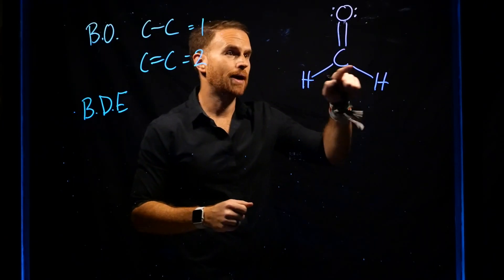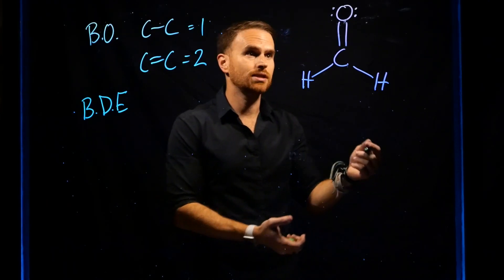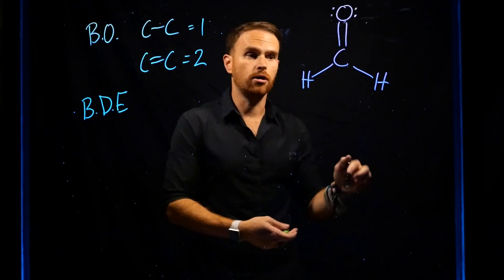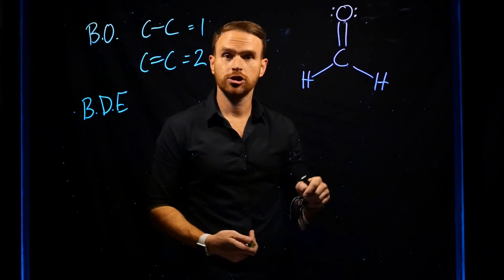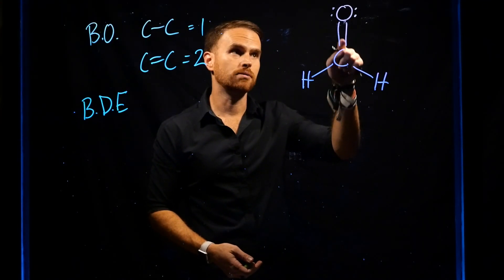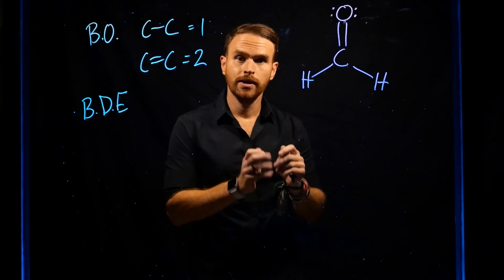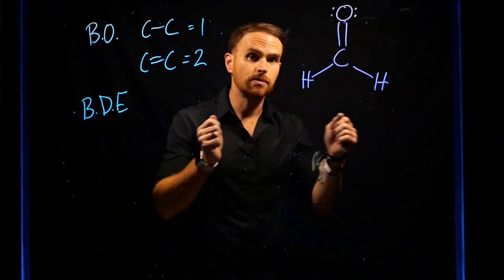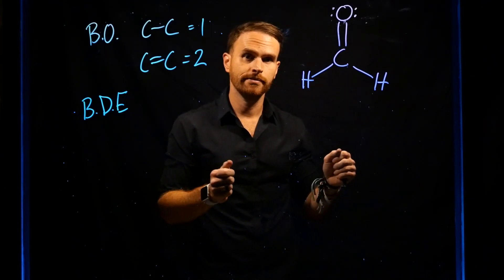Looking back at formaldehyde, it should be clear that because the C=O is a double bond versus the C–H being a single bond, the bond between carbon and oxygen is going to be shorter. This also means it's going to take more energy to break those two atoms apart.